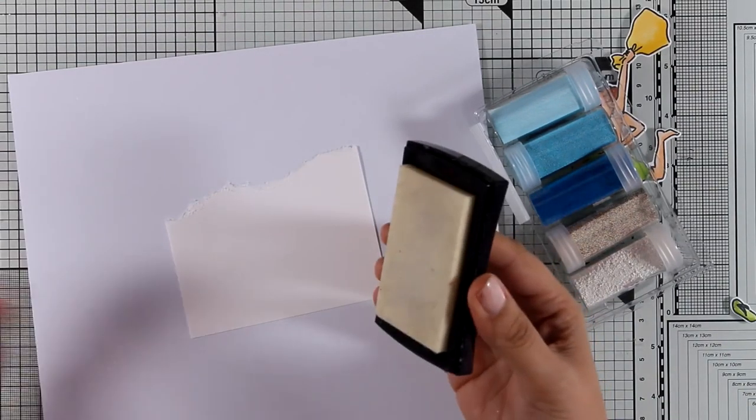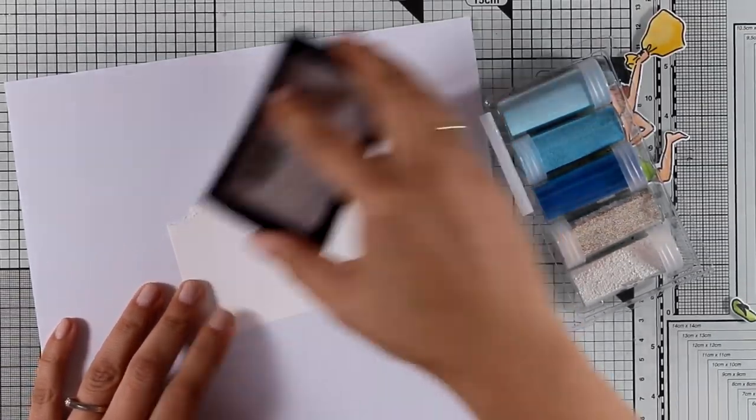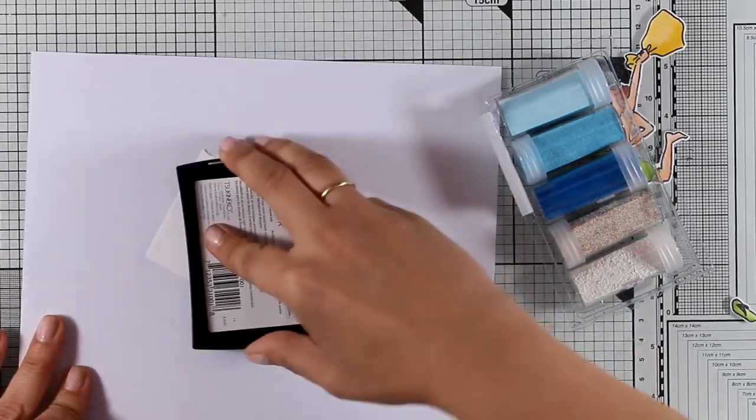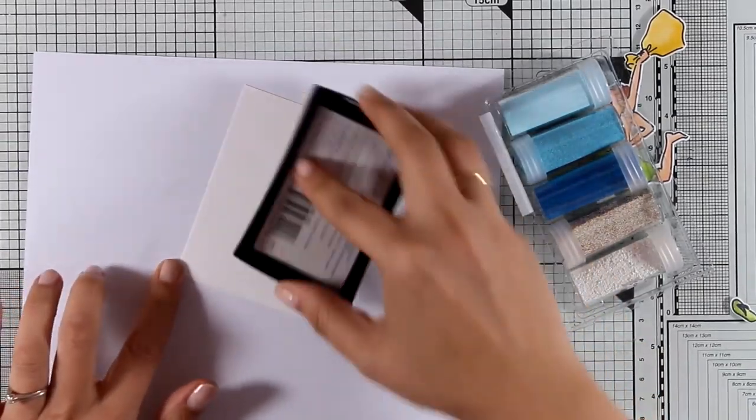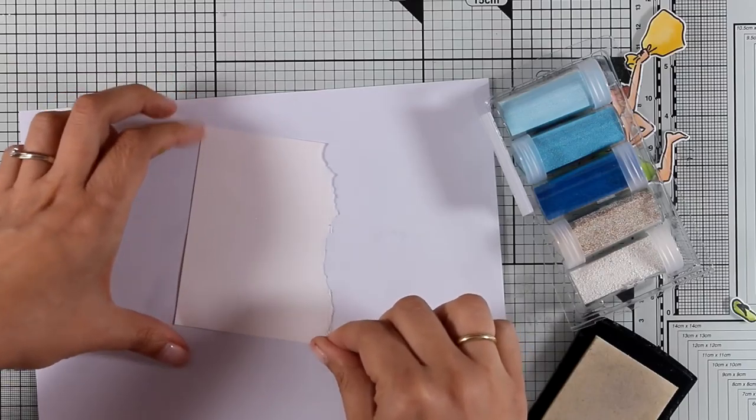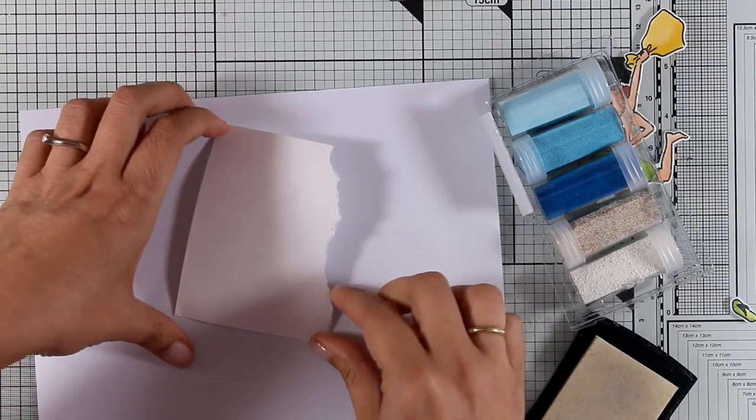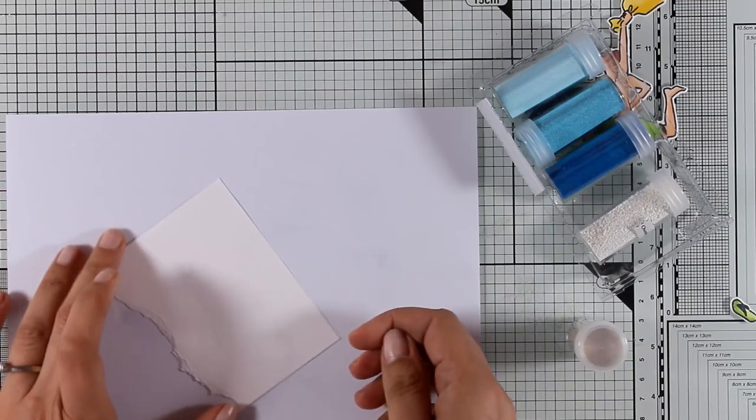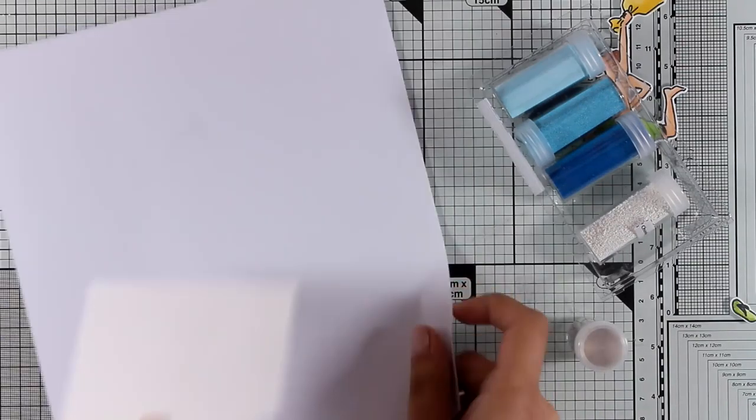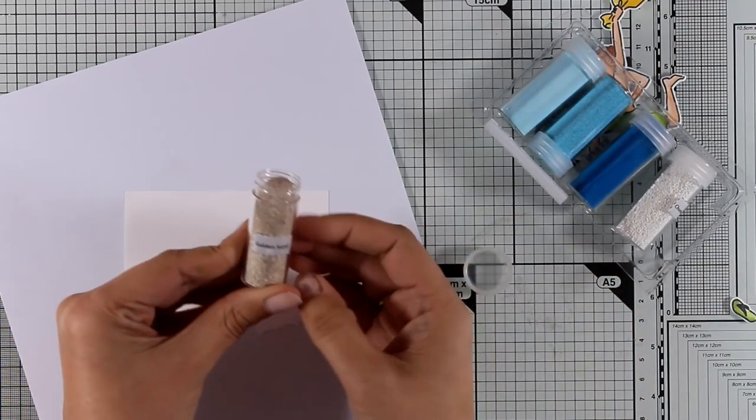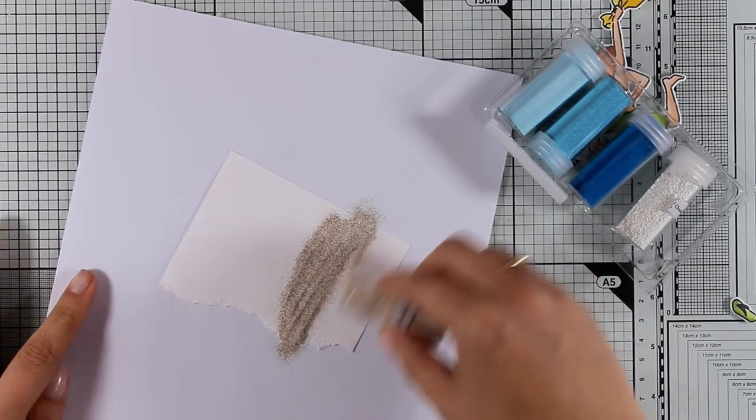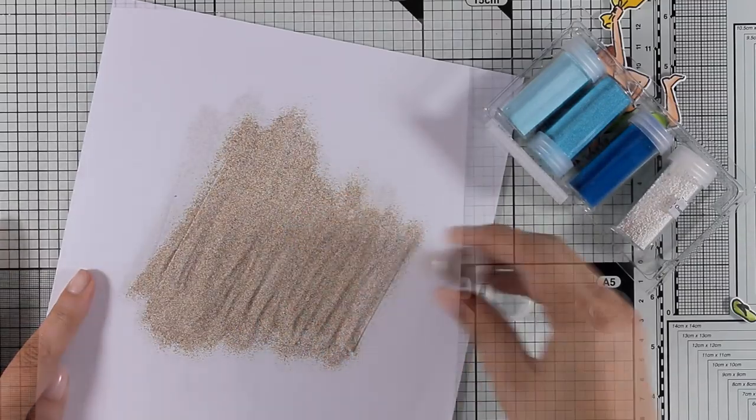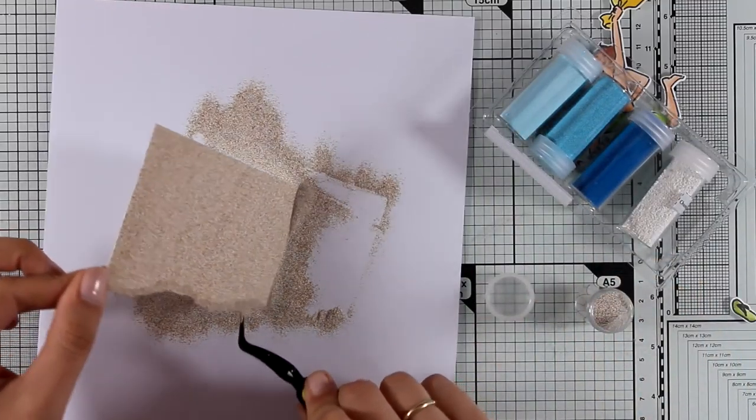I'm going to cover up completely this white panel with my Versamark ink. The set of embossing powders by Stampendous has five different embossing powders - three in blue colors perfect for the sea and sky, one has this sandy look, and there's also a chunky white one which is perfect to add white details where the sand and sea meet. Here I'm using the embossing powder called Golden Sand.